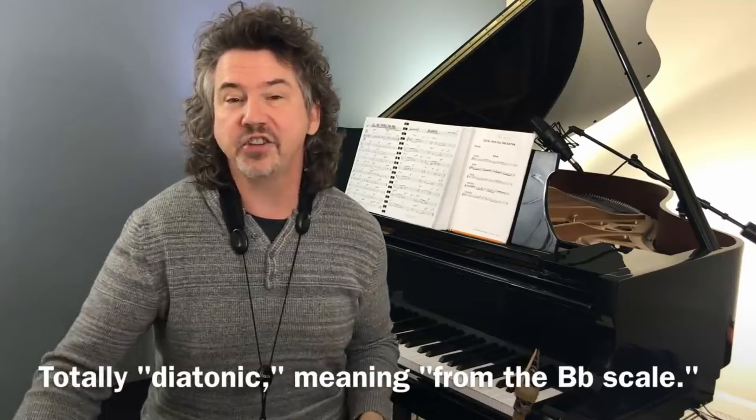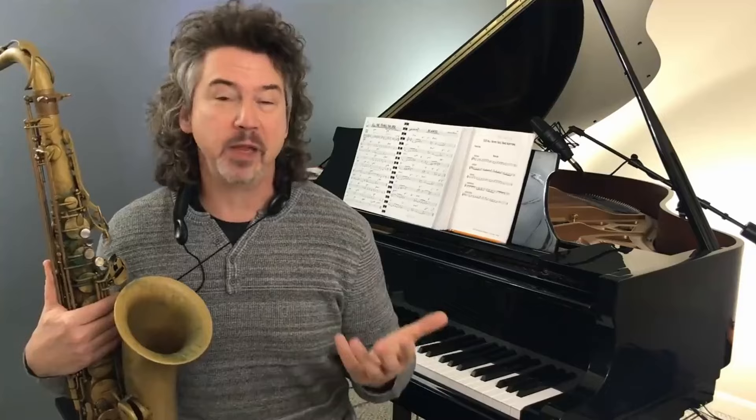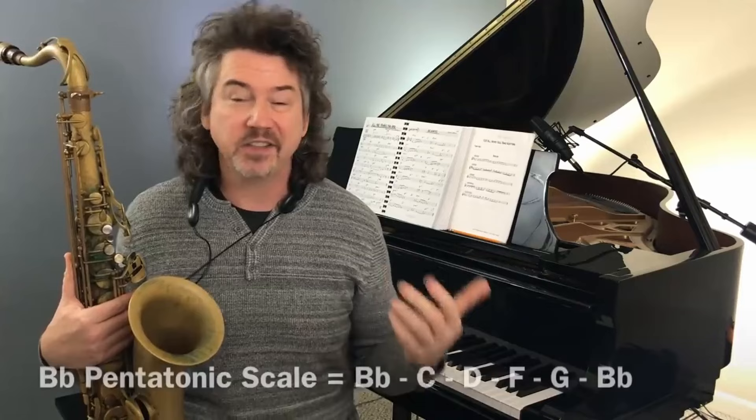So let me play the song on the sheet I put here for you — Lester Leaps In, in the key of B-flat. [plays Lester Leaps In] Famous, famous tune. And it's made from the B-flat major scale — more specifically, even less than the B-flat major scale. It's the B-flat pentatonic scale.